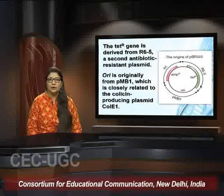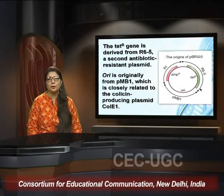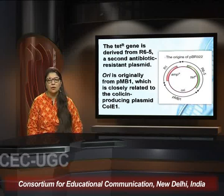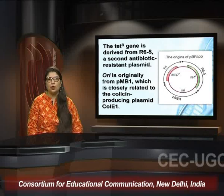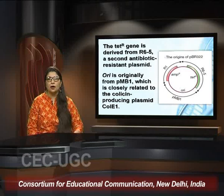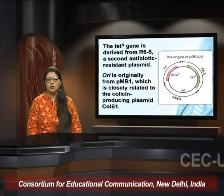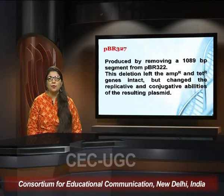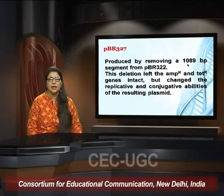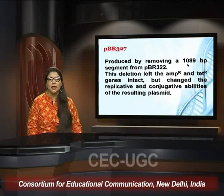We are studying this to understand the basis of how cloning vectors work. PBR 322 is not in much use now, but it shows how naturally occurring plasmids are manipulated. From this foundation, PBR 327 came into being — it was produced by removing a 1089 base pair segment from PBR 322, which is how the series of vectors develops, each customized to suit particular needs.